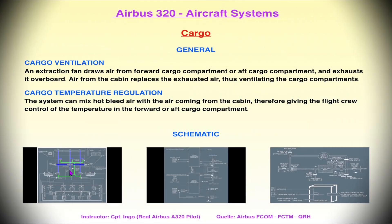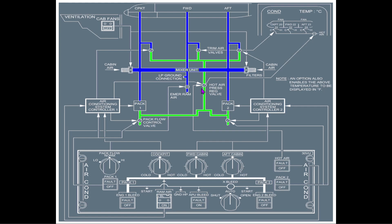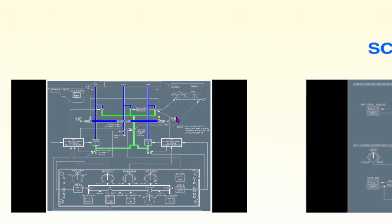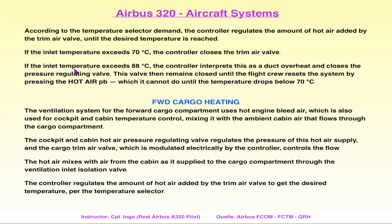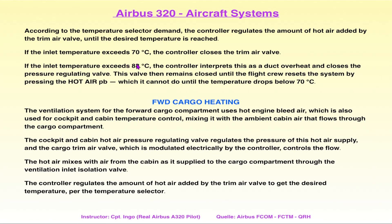Genauso funktioniert es bei der Air Condition: Kommt zu heiße Luft durch, schließen sich das Pressure Regulation Valve und das Trim Air Valve – gesteuert vom Air Condition System Controller. Das gleiche Prinzip gilt beim extra Pressure Regulation Valve im hinteren Cargo Compartment. Bei 88°C und 70°C werden das Cargo Pressure Regulation Valve und das Trim Air Valve geschlossen. Die genauen Temperaturwerte sind nicht so wichtig. Die Ventile öffnen wieder, sobald die Temperatur unter 70°C fällt.